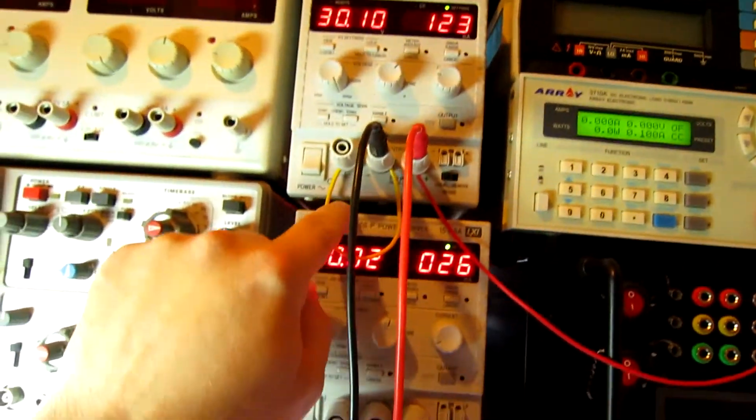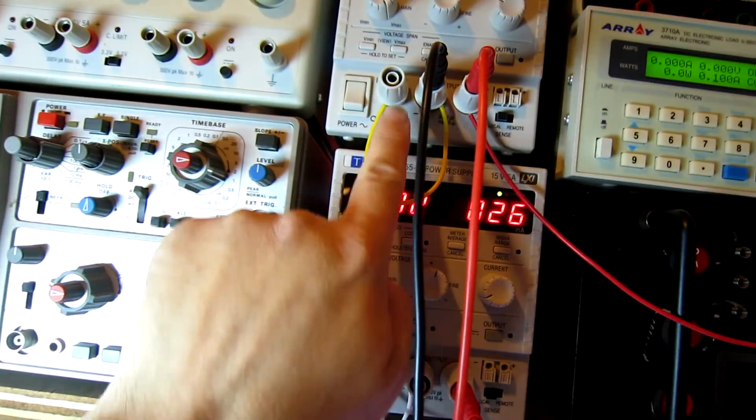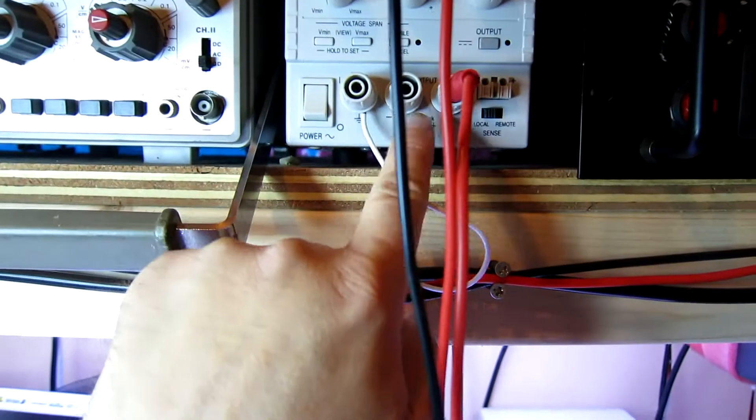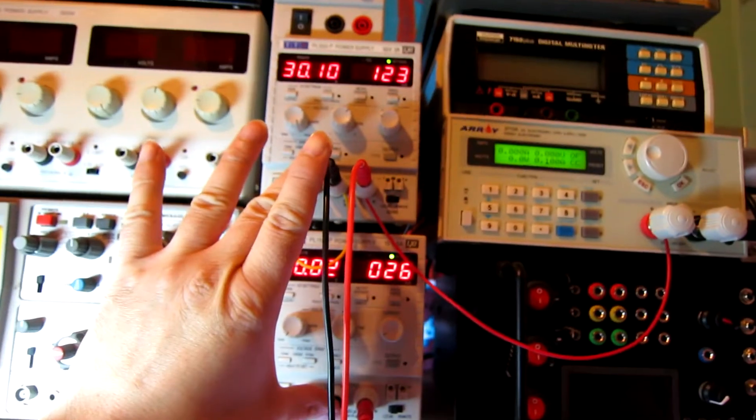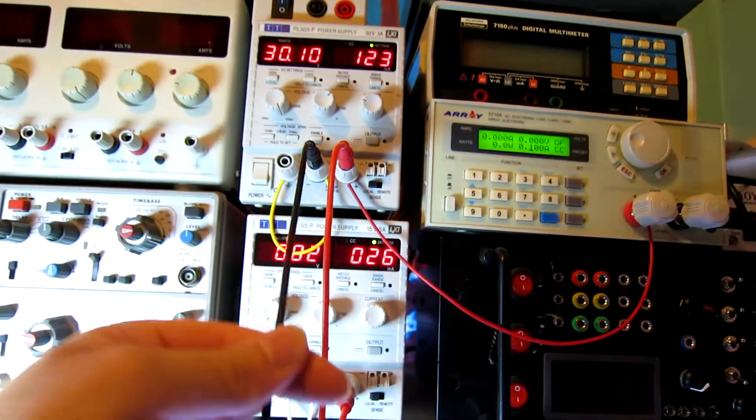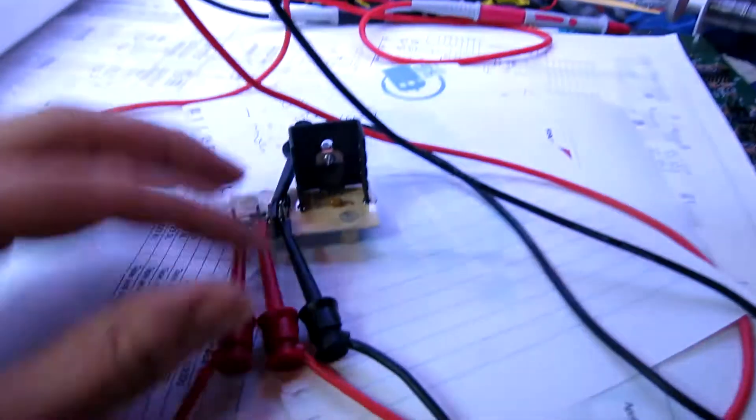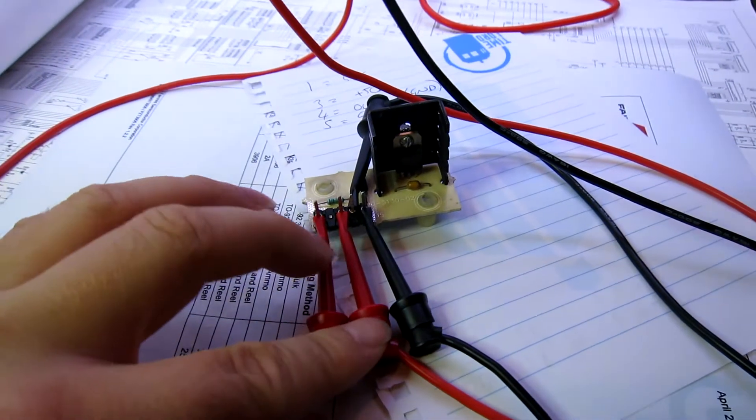We hook up the ground lead to the ground of one of the power supplies. Please note I have basically earth referenced the negative on this and on this as well, so the grounds are common between the two without me having to use more than one lead.